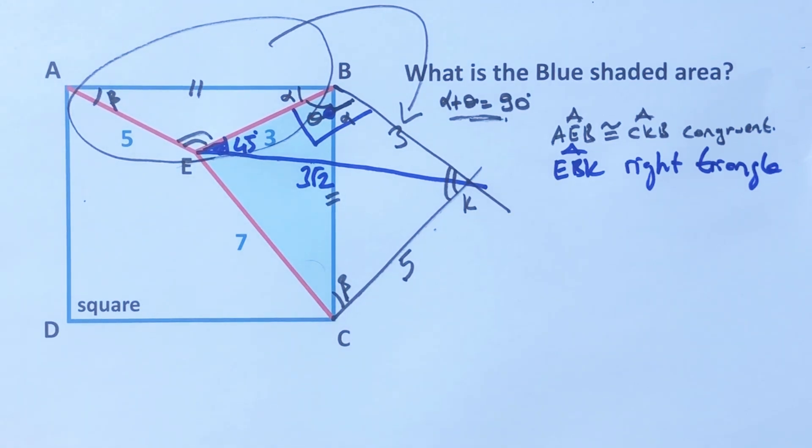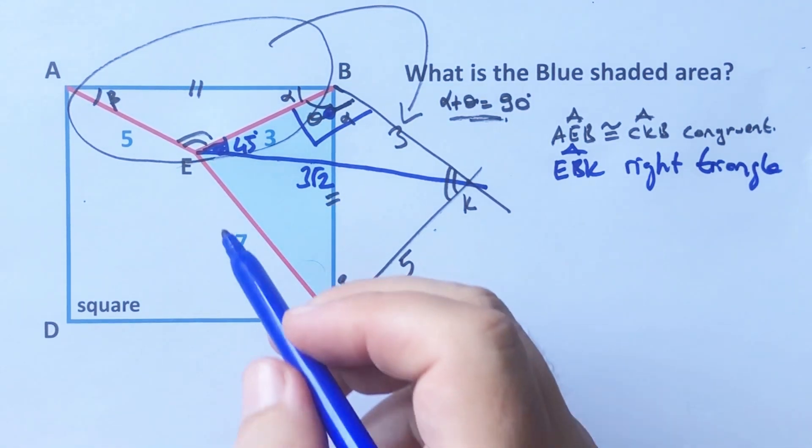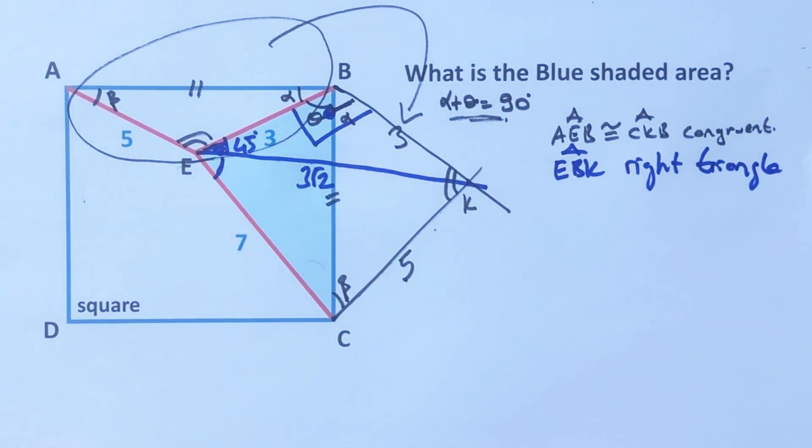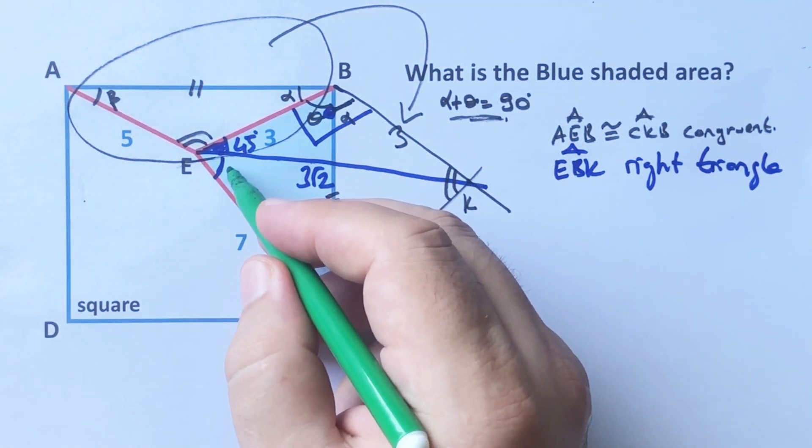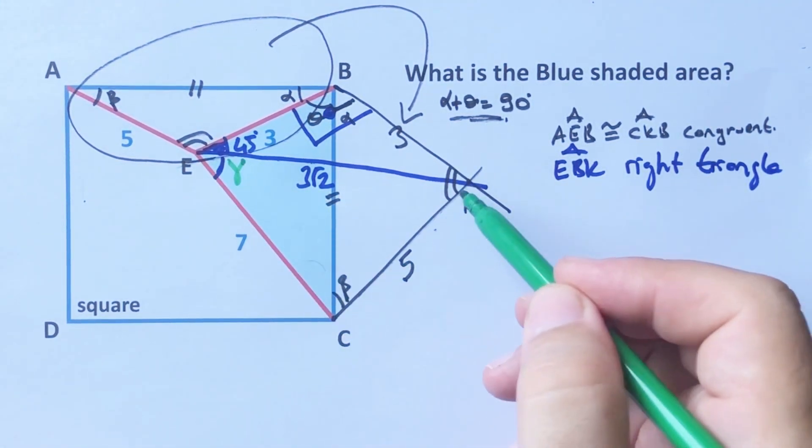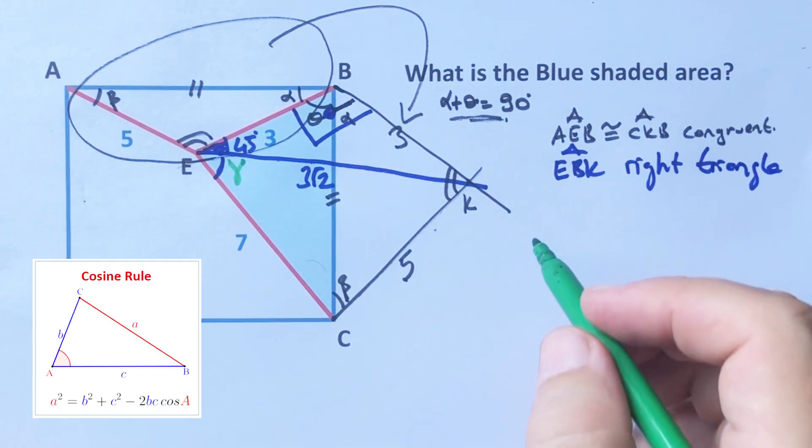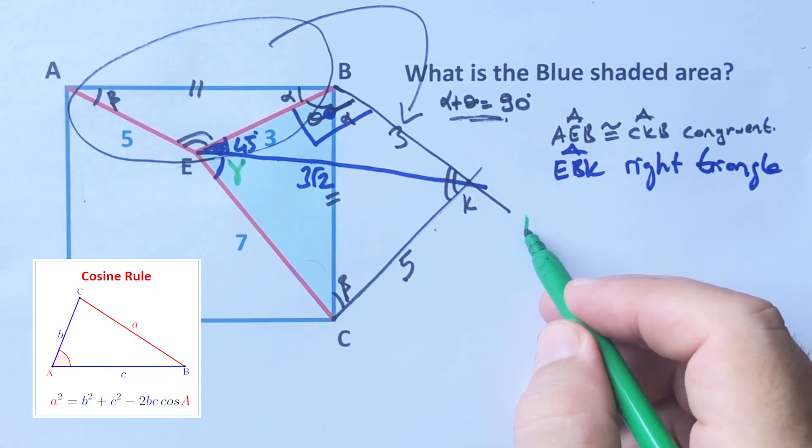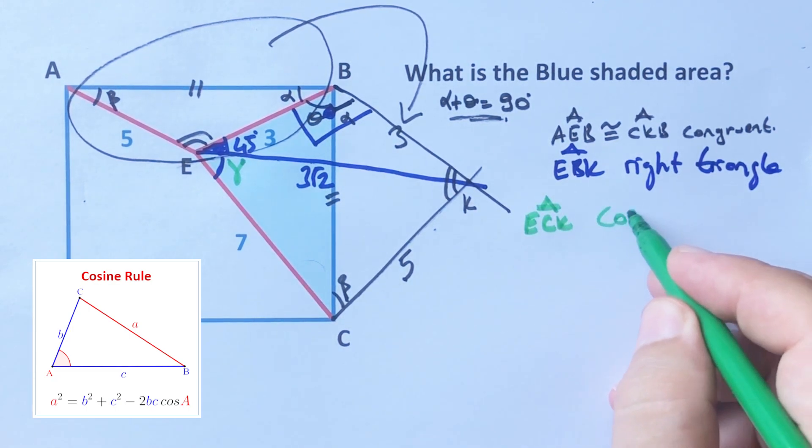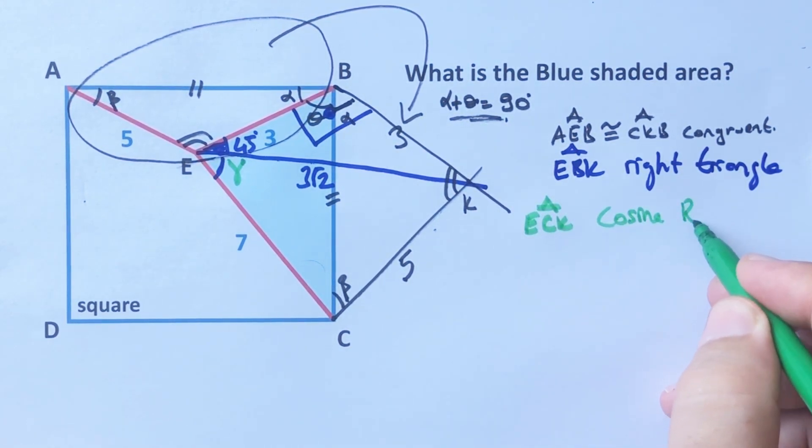And then let's call here gamma. For this triangle, if we apply cosine rule for ACK triangle, let's apply cosine rule.